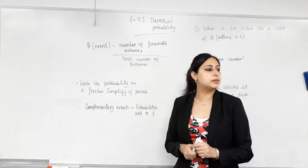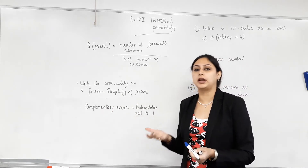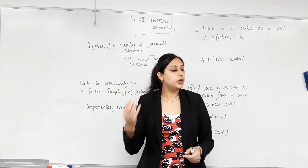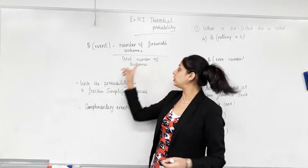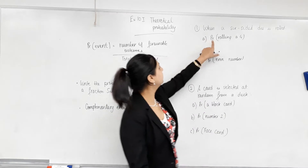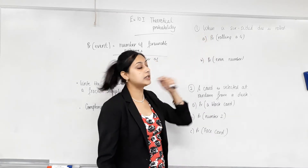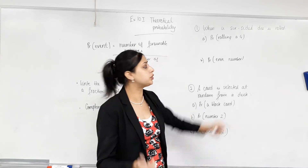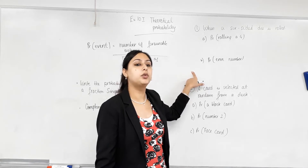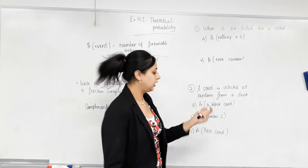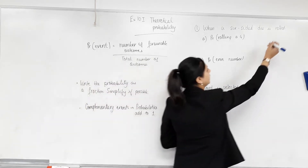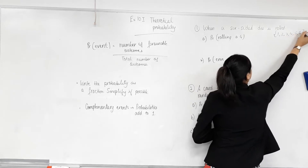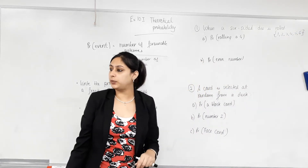As we talked about rolling a die, you all have some idea about how to find how likely an event is. We've talked about sample space. Using the sample space, we find the total number of outcomes for an event. For example, when a six-sided die is rolled — rolling a die is an event. So the first thing you do before calculating the probabilities is you write the sample space. So I am going to write the sample space. Have I covered all the possible outcomes?